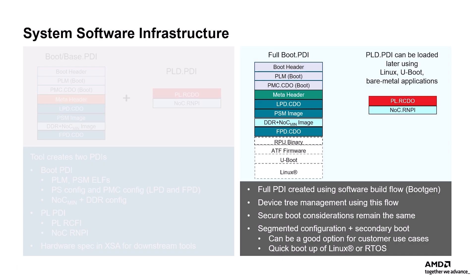On top of the PS boot PDI, users have different options to add different images to the hardware tool-generated PDIs and extend to the full boot PDI. The full boot PDI can be created using different software build flows, including BootGen or the Vitis Boot Image Generation Wizard. Device tree management is also taken care of at this step. Note that considerations for secure boot remain the same as in the flat flow. After these decisions are made, the PDI image is generated and programmed using conventional boot devices such as QSPI or obtained from remote storage via PCIe or Ethernet interfaces. This approach allows users to quickly boot to an operating system and load the PL PDI at later stages using runtime software.